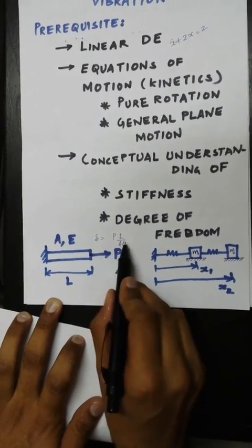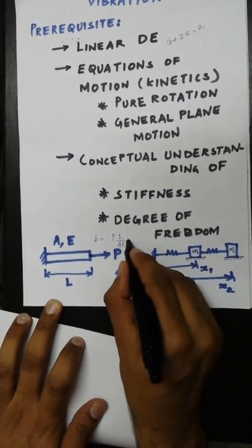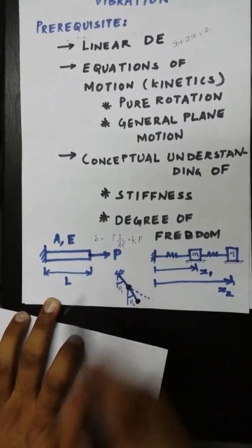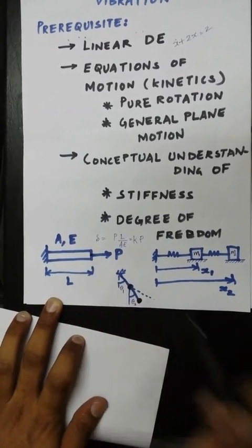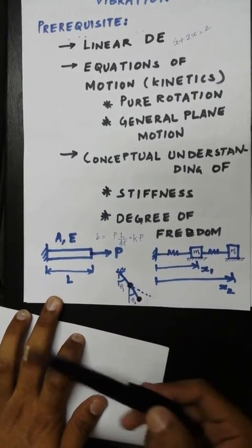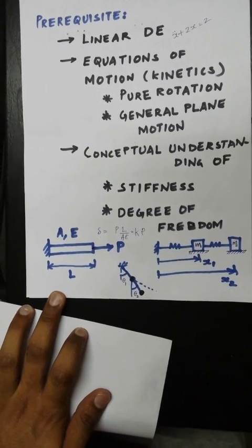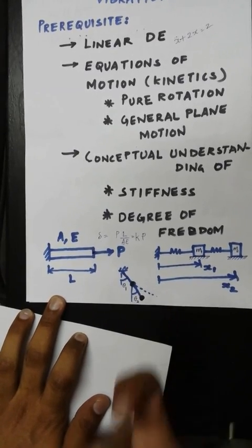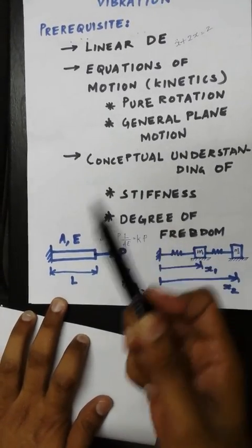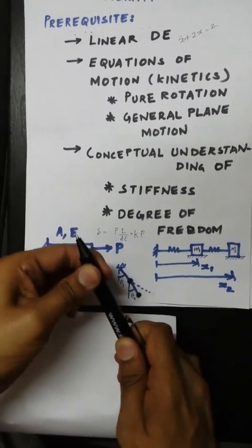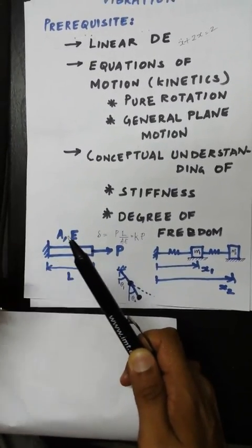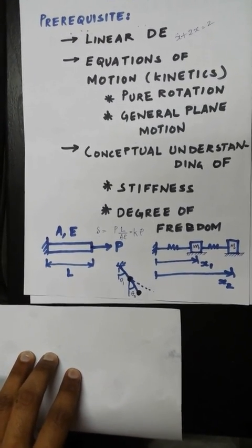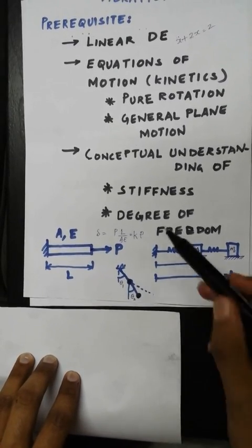This can be written as K times P, where P is the force and K is the stiffness of this one-dimensional rod. The purpose of this demonstration is that all deformable objects have some sort of stiffness built into their system. Whatever things, even this pen has got a particular stiffness as I am pulling it up like this. All deformable bodies have got some stiffness.